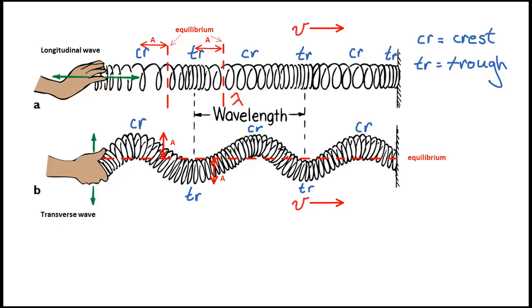Okay. So we see our amplitude is labeled from our equilibrium line, this red dotted line, to a trough, or from the equilibrium line to a crest. That's how we label the amplitude on a longitudinal wave, a little bit different. Here we go.